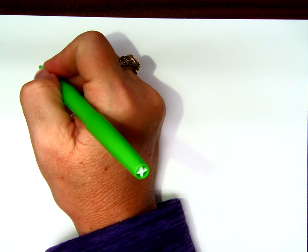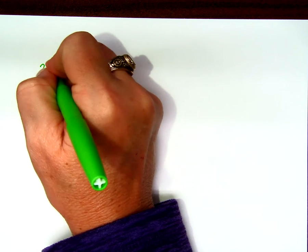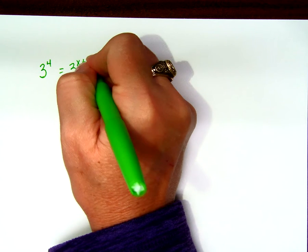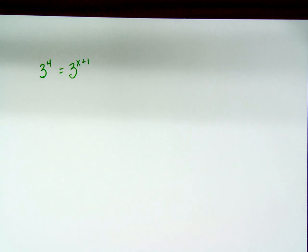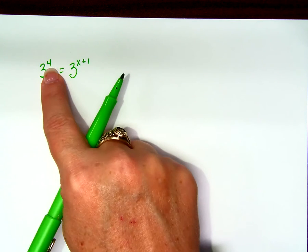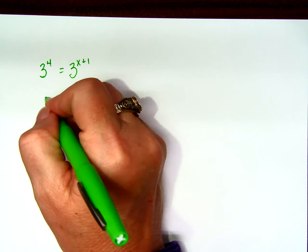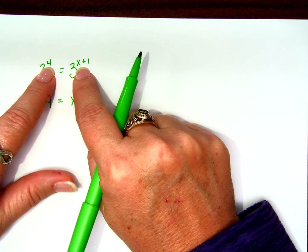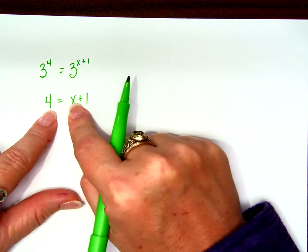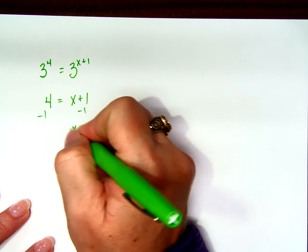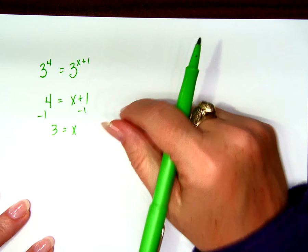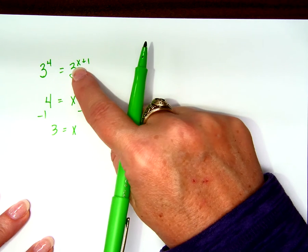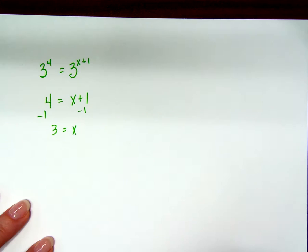We'll start off really, really easy. How about that? 3 to the fourth power equals 3 to the x plus 1 power. That's really easy. Because if 3 to the fourth power equals 3 to the x plus 1 power, shouldn't 4 equal x plus 1? If I'm trying to solve for x and the bases are exactly the same, shouldn't the exponents also be exactly the same? So I just set them equal to each other and solve. x equals 3. We substitute it in just to make sure: 3 to the fourth equals 3 to the 3 plus 1, which is 4. It's correct.